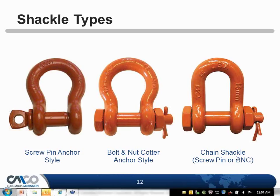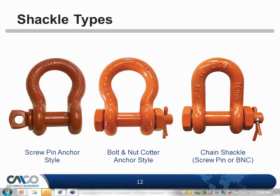We have different types of shackles. We have a screw pin anchor shackle — it just has a screw pin with no bolt and nut at the end. The thread goes into the body of the shackle, and that's usually the rigger's favorite because it can easily be assembled and reattached in the field. We have the bolt nut cotter style, and then we have the chain shackle or D shackle, which is a smaller, more compact type.